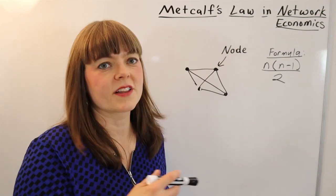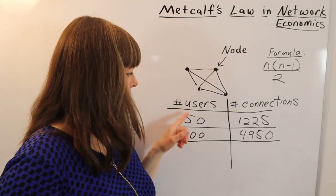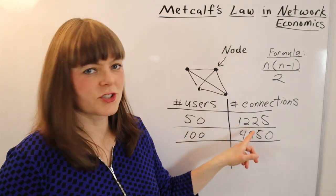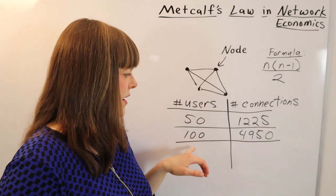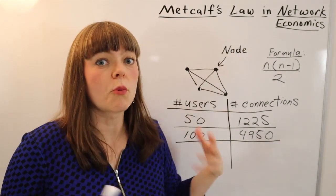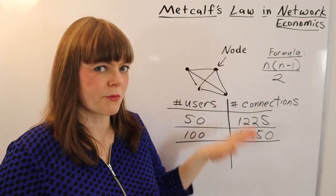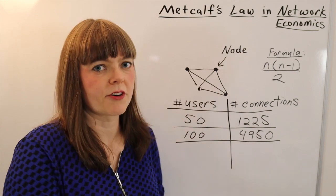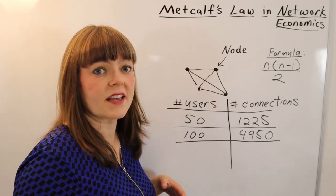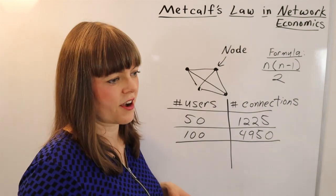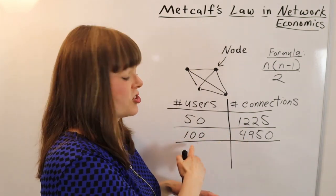Let's use this formula to do some comparisons. A social media company with 50 users has 1,225 possible connections between users, but a company that's twice as big has 4,950 — almost four times as many possible connections. The same pattern repeats as these companies get bigger and bigger. So comparing these two, in terms of how valuable the network is, that value is way, way bigger for a company that's just a little bit bigger.